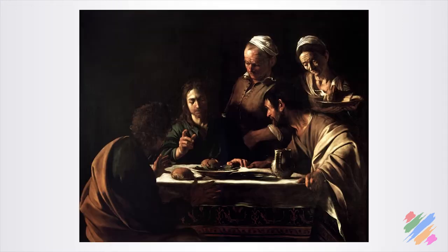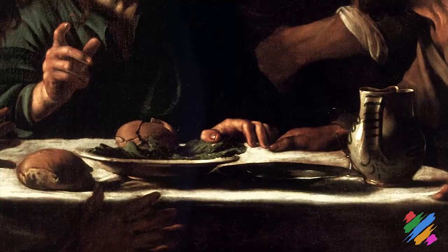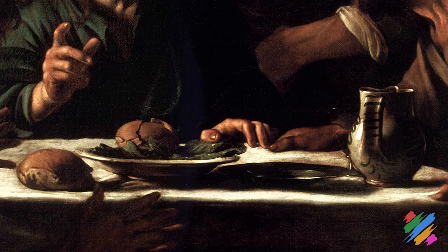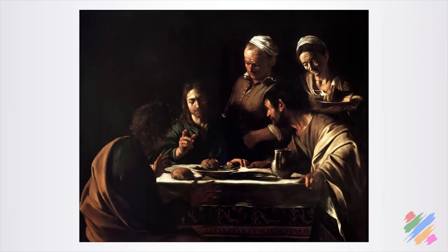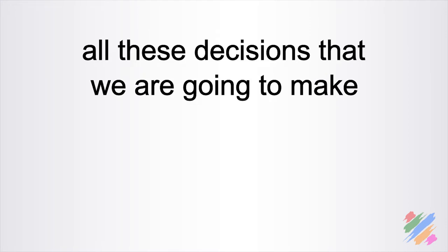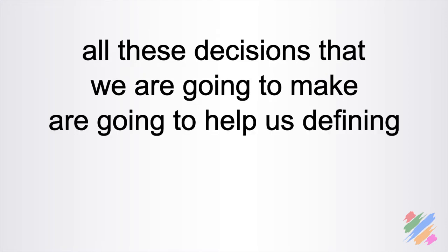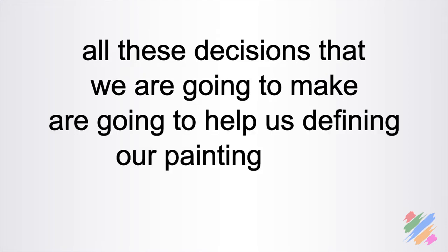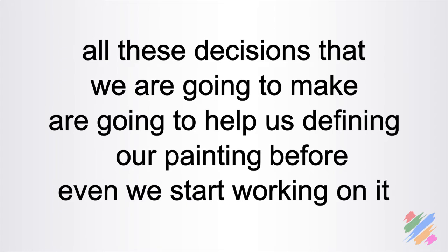In the Caravaggio's painting, he had to choose the position of the food and beverages on the table, and he had to arrange the people inside the scene. All these decisions we are going to make will help us define our painting before we even start working on it.